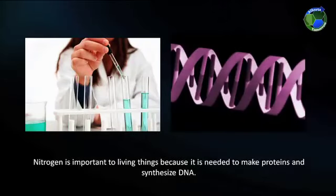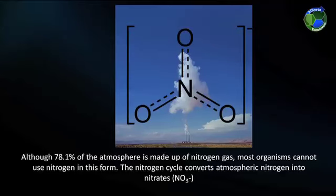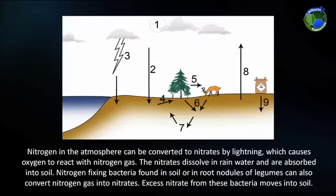Nitrogen is important to living things because it is needed to make proteins and synthesize DNA. Although 78.1% of the atmosphere is made up of nitrogen gas, most organisms cannot use nitrogen in this form. The nitrogen cycle converts atmospheric nitrogen into nitrates. Nitrogen in the atmosphere can be converted to nitrates by lightning, which causes oxygen to react with nitrogen gas.